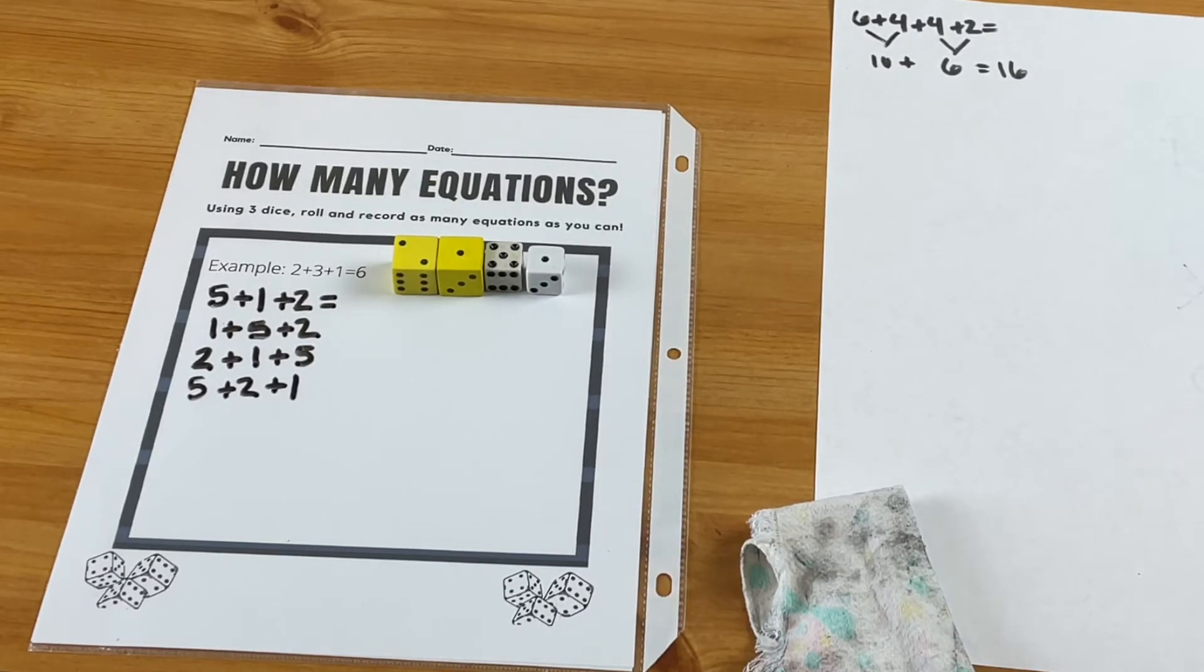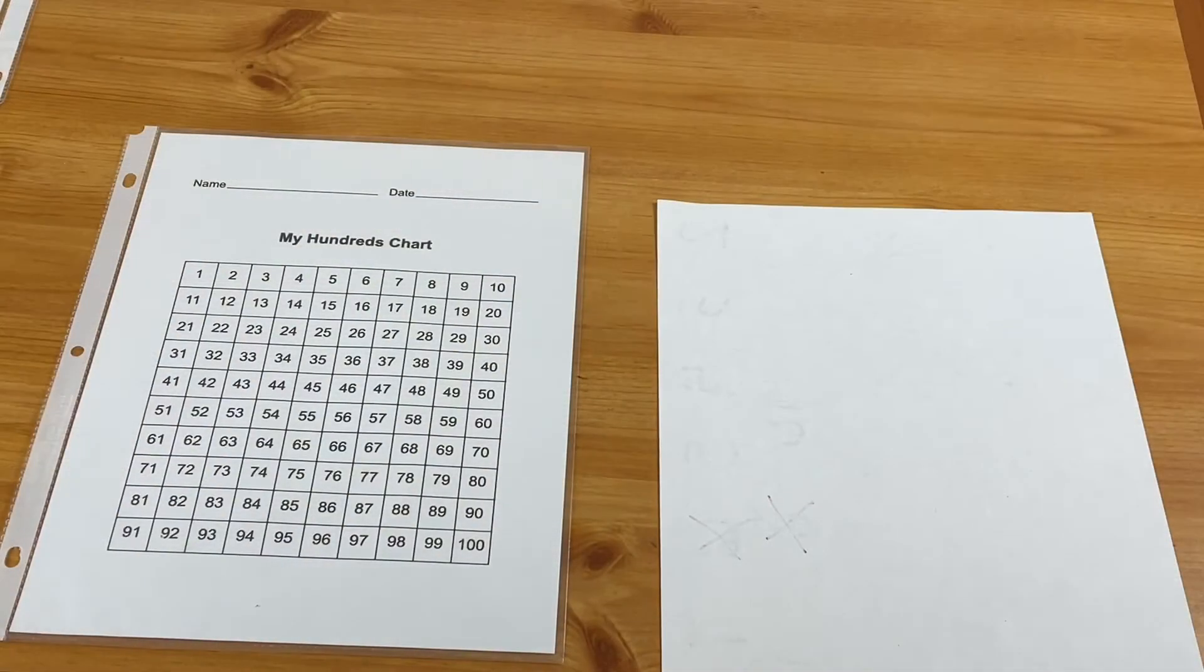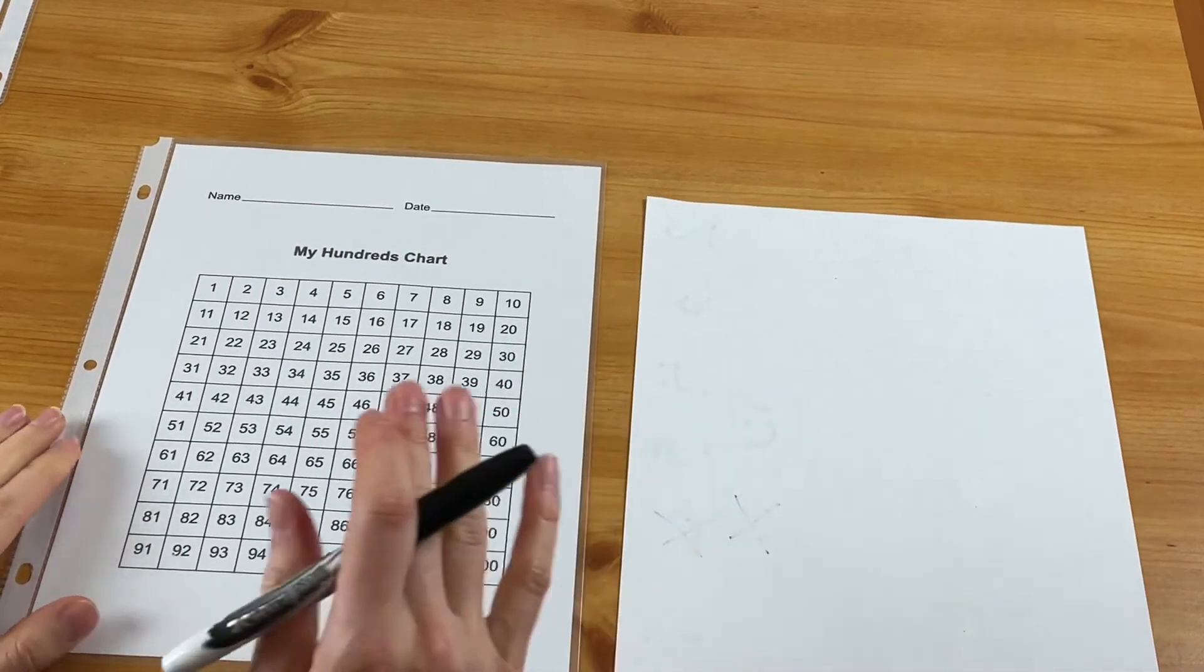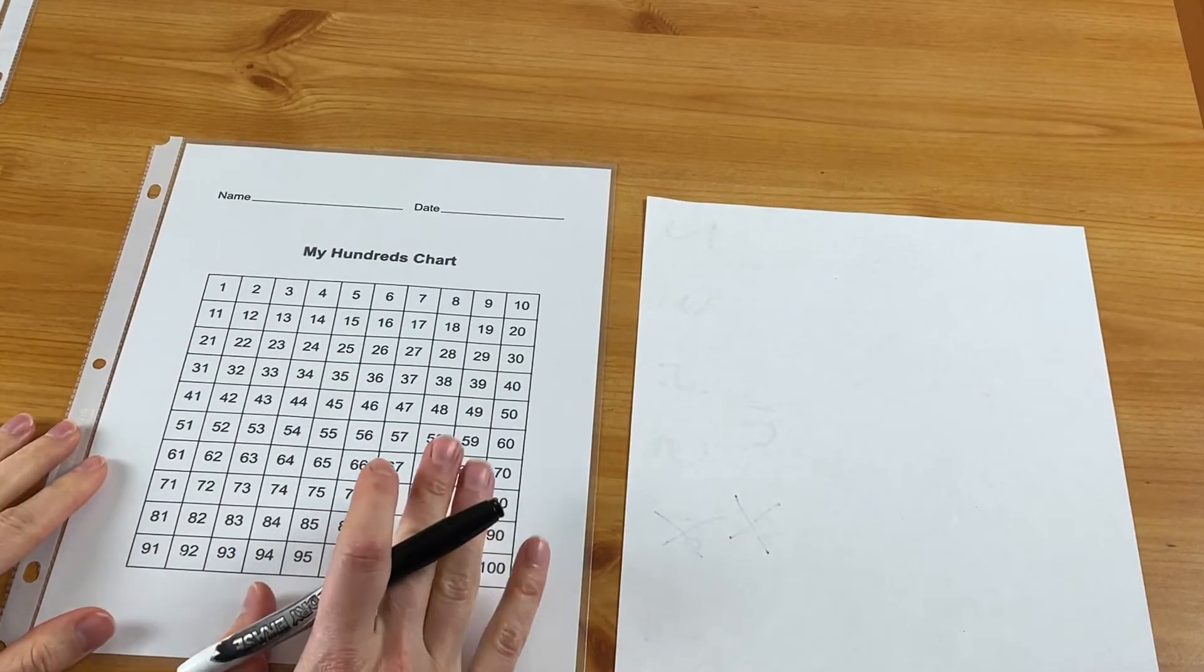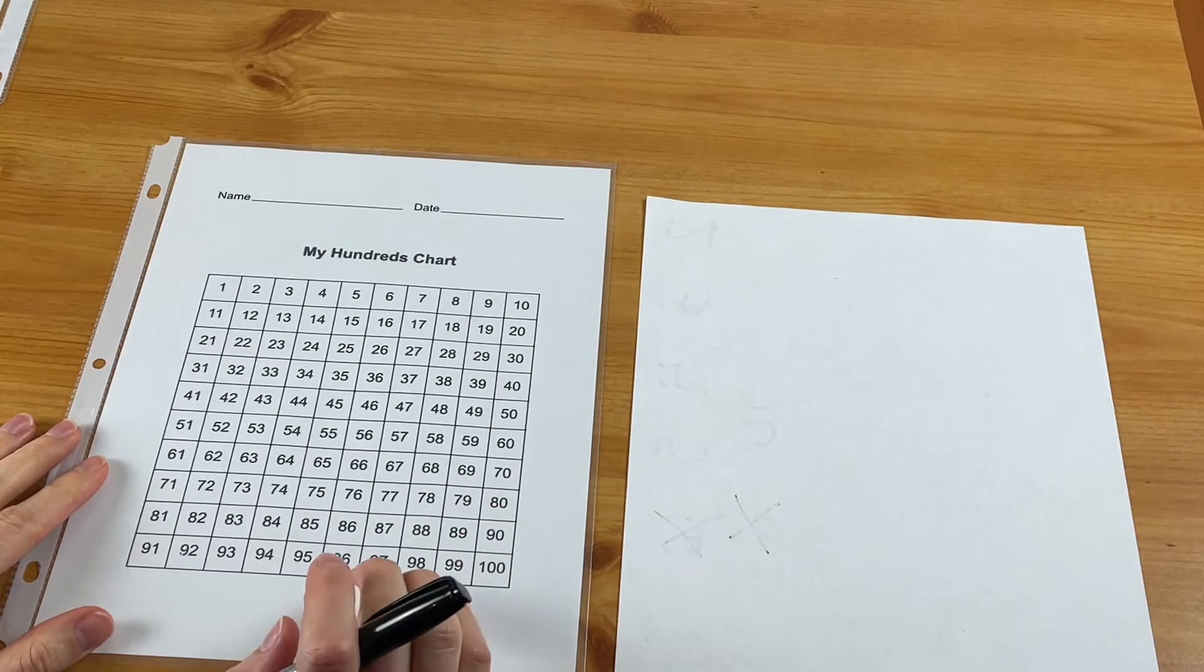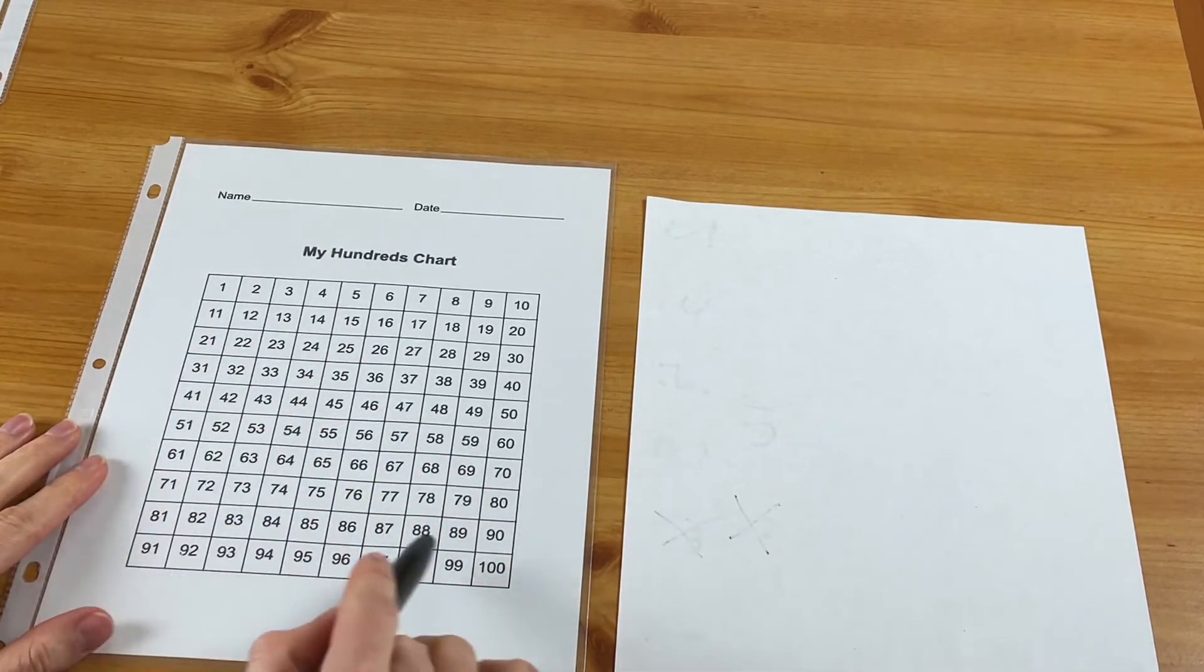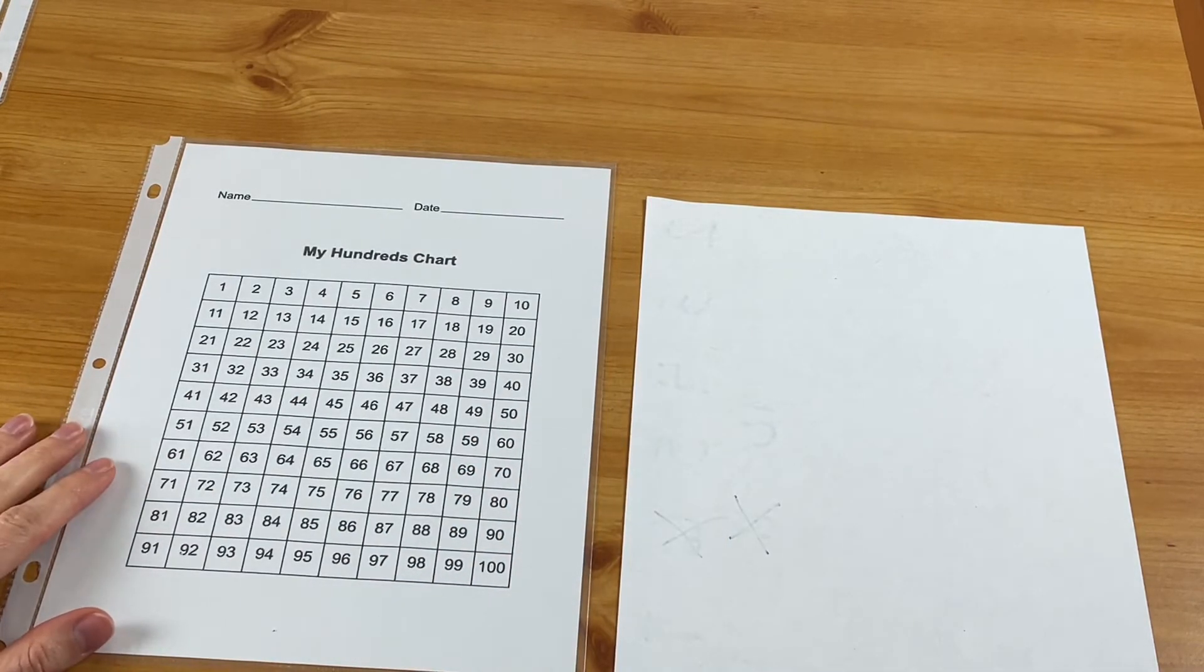This game is called Pig, and you can do just a plain piece of paper or I've printed out a hundreds chart. So maybe as your kids are younger or just figuring out the game, it might be helpful to have the numbers on here so they don't have to keep track any other way, it just visually helps them as they get started.